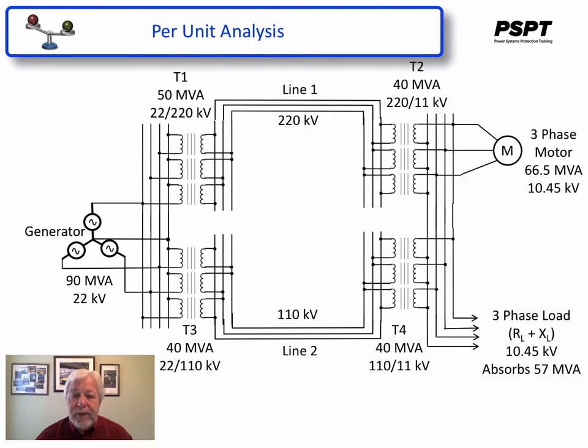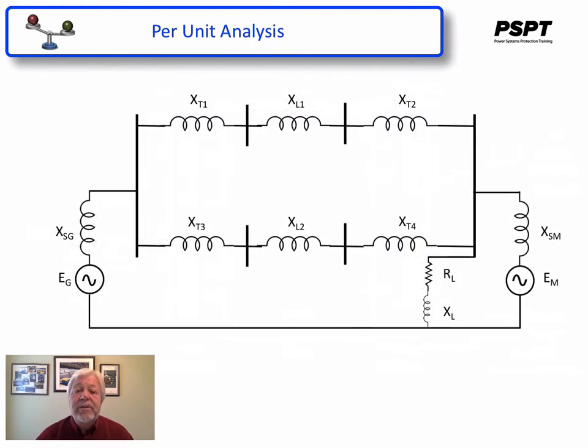Per unit and per phase analysis allows us to change this circuit from what was just previously up there to something like this, which is a heck of a lot easier to analyze. Once you have analyzed the situation, or calculated, say, the currents and the voltages, you can very easily work backwards through the per unit and per phase system to come up with your three phase values.